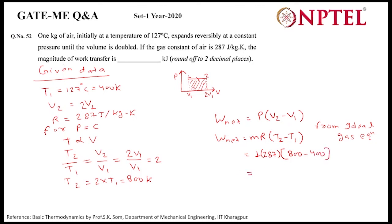On solving, when we calculate this, it will become 114800, so 114.8 kilojoule. So network done for this is 114.8 kJ. Thank you.